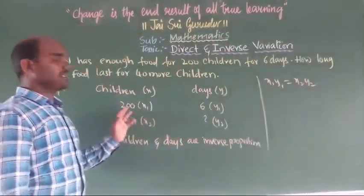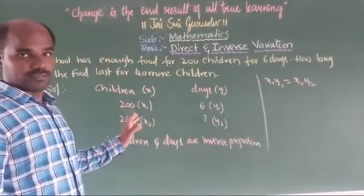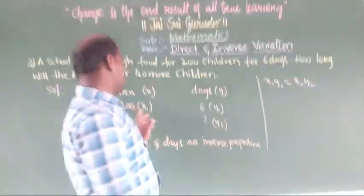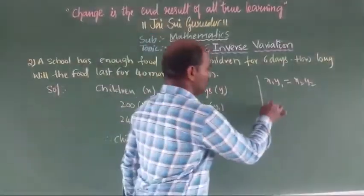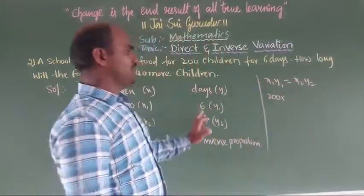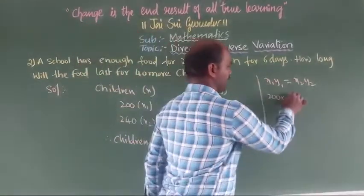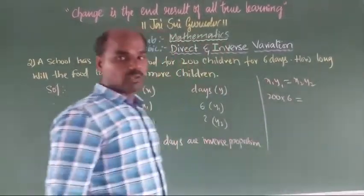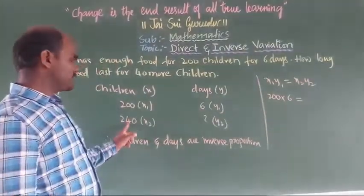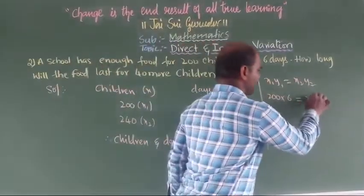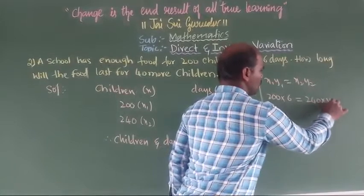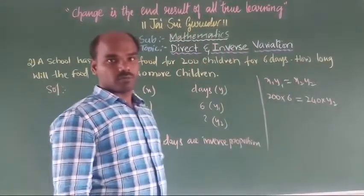We have to substitute the values. X1 is 200, y1 is 6, x2 is 240, and y2 is question mark. So: 200 × 6 = 240 × y2.